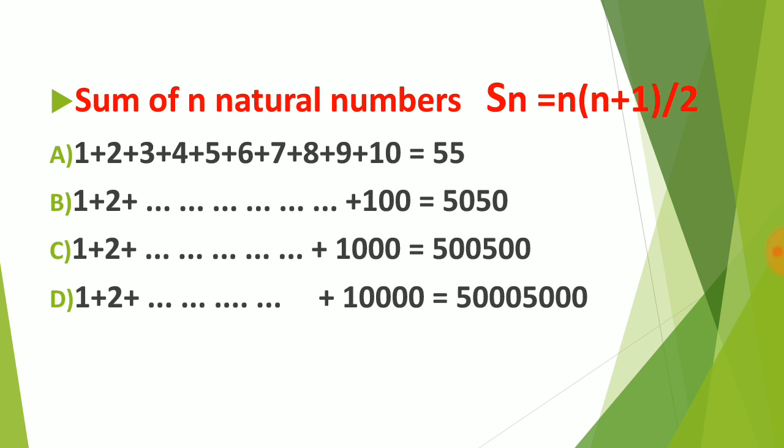For the sum of n natural numbers, the formula to calculate their sum is: S = n(n + 1) divided by 2.